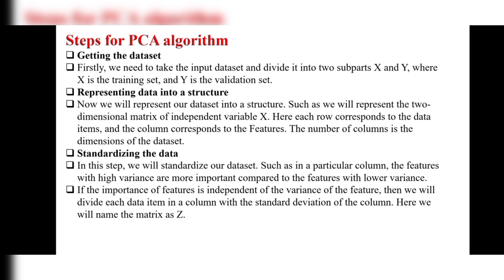Step 2: Representing data into a structure. After dividing the dataset, we represent it as a two-dimensional matrix of the independent variable X, where each row corresponds to data items and each column corresponds to features. The number of columns represents the dimensions of the dataset.